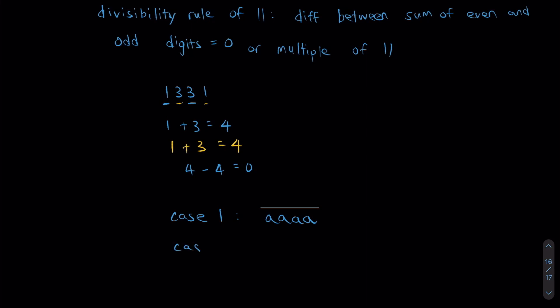The second case for a possible palindrome is this. You have a four-digit number with only two different digits. And it has to be in this order right here, A, B, B, A.